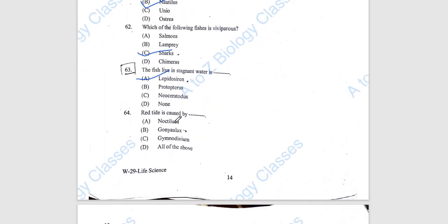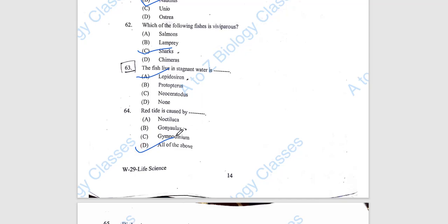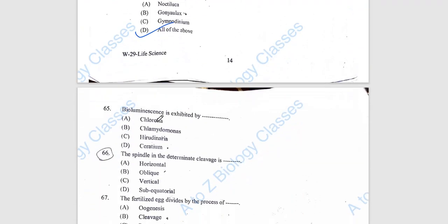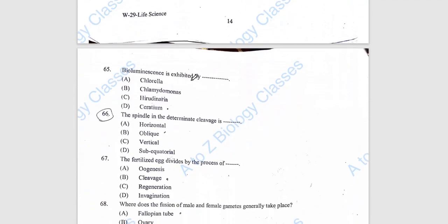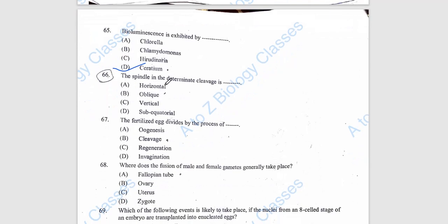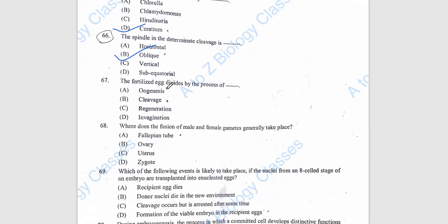Question 64: Red tide is caused by all of these, option D. Question 65: Bioluminescence is exhibited by option D. Question 66: The spindle in determinate cleavage is oblique. Question 67: The fertilized egg divides by the process of cleavage, option B.